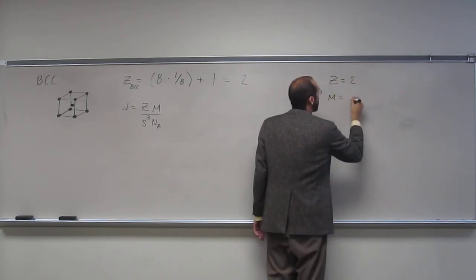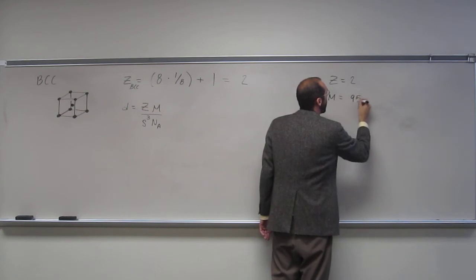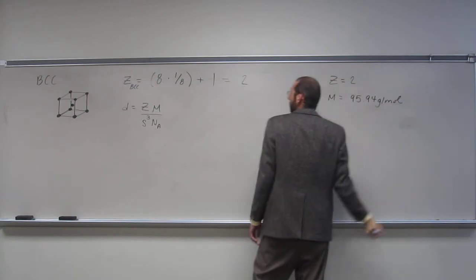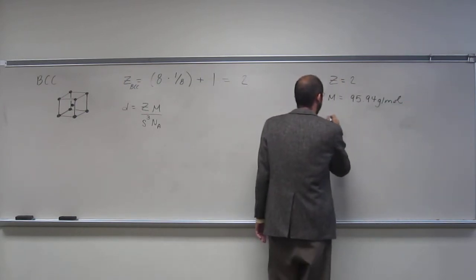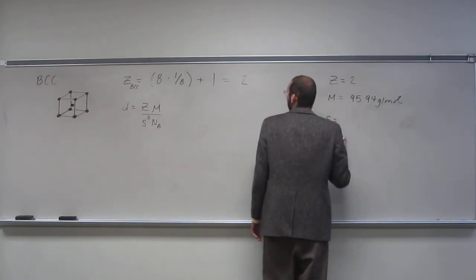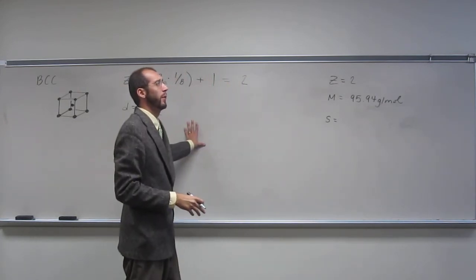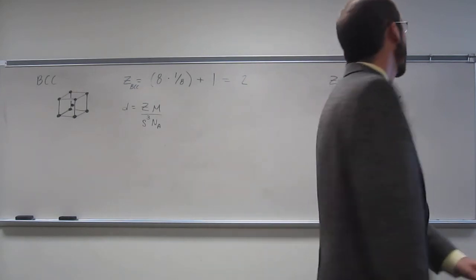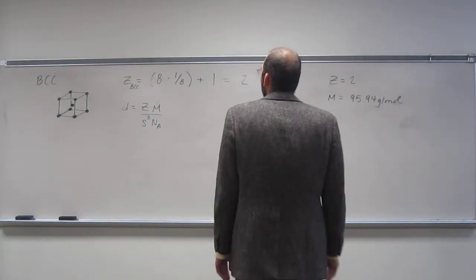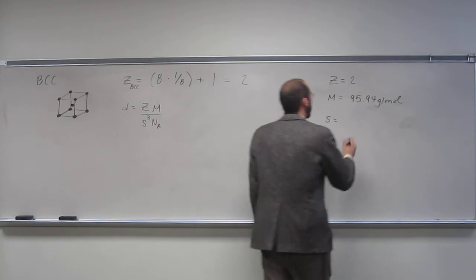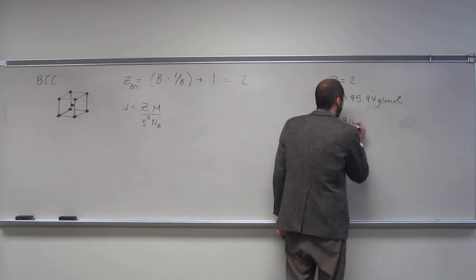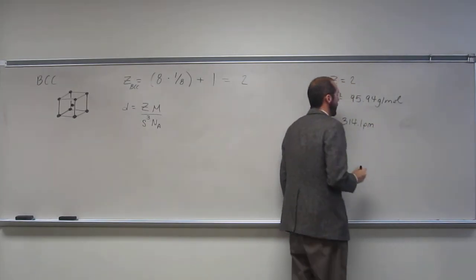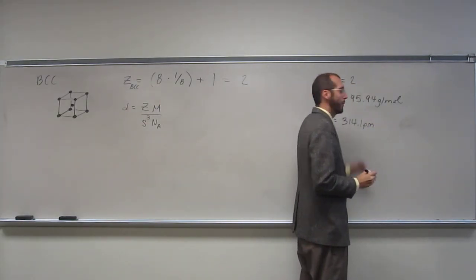Okay, so we know Z is 2, molar mass, what did I say it was, 95.94 grams per mole. On the side, remember, we want these densities in units of, it didn't say, but grams per cubic centimeter. Okay, so it gives us the size in picometers, 314.1 picometers. So how many centimeters is that going to be?